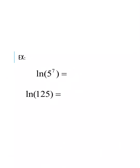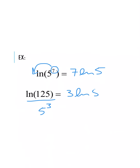We're going to apply this property one more time. We have the natural log of 5 to the 7th. Identifying our exponent — which is 7 — that gets moved to the front, giving us 7 times the natural log of 5. Now see if you can find the simplified form of the natural log of 125. Since 125 equals 5 to the 3rd power, we get 3 times the natural log of 5.